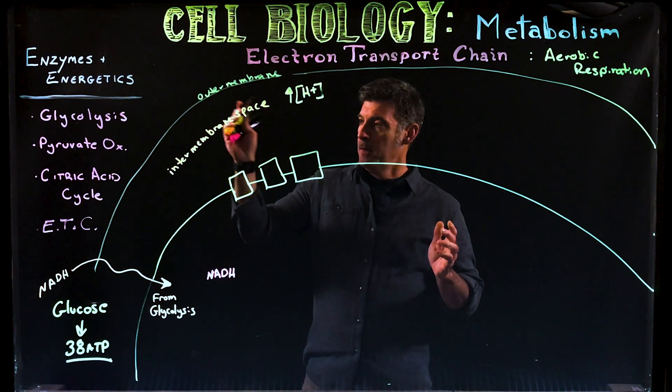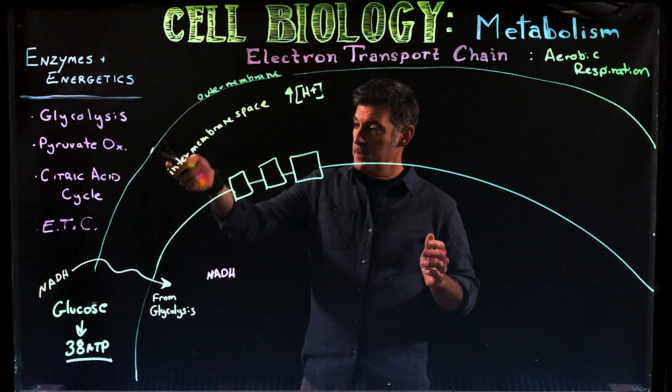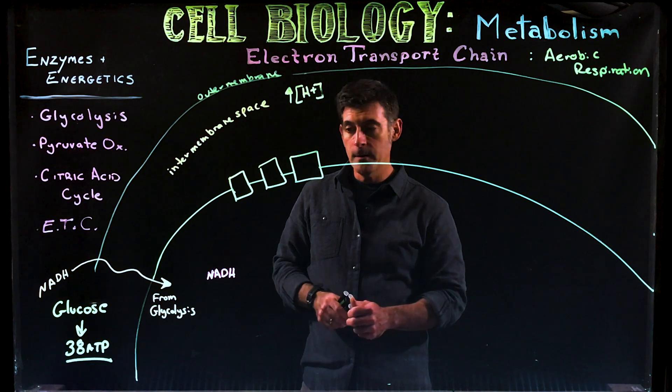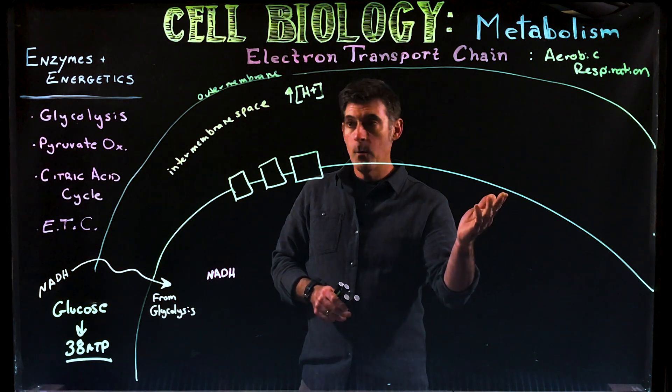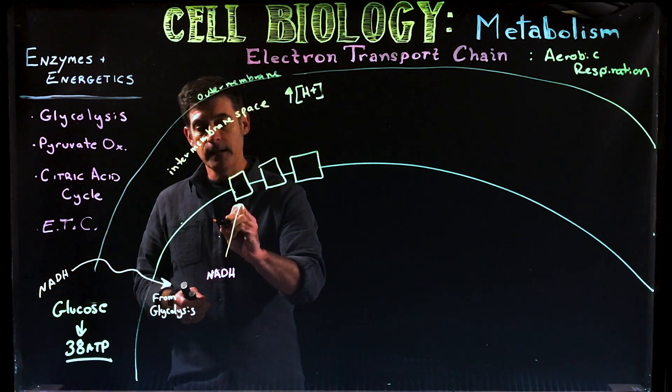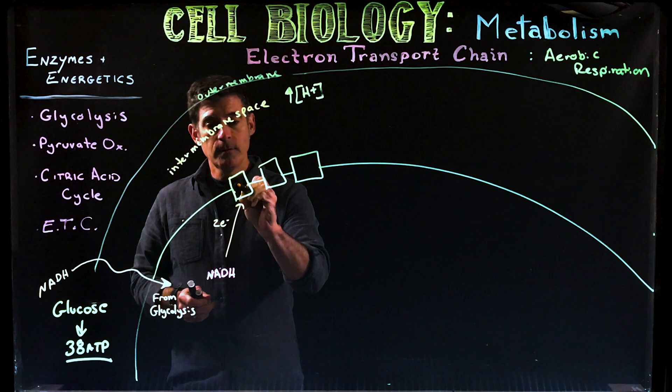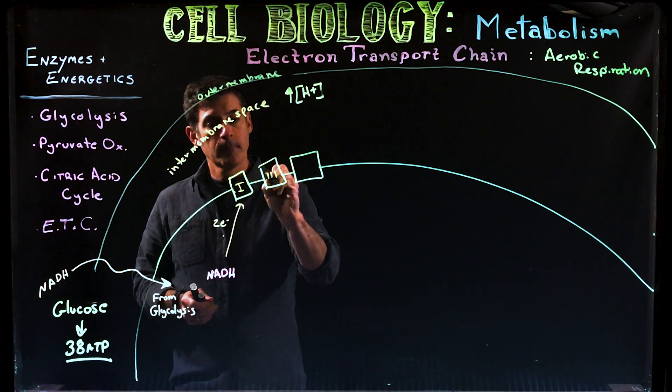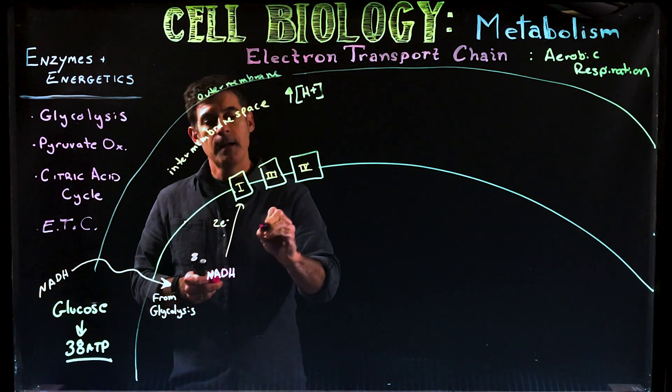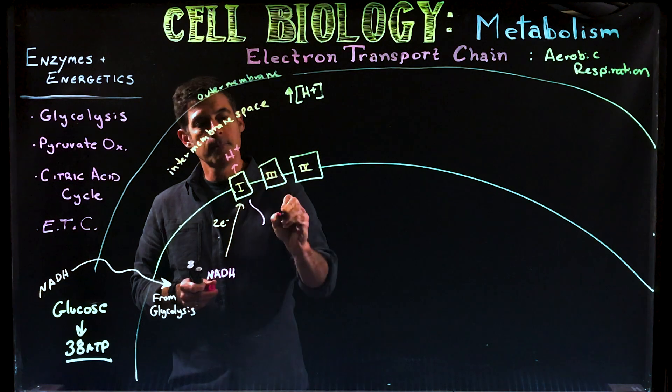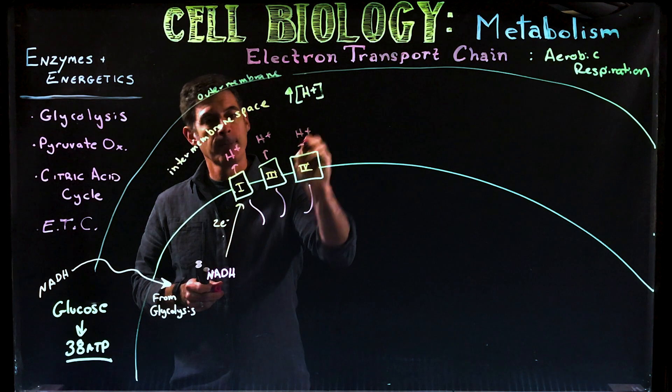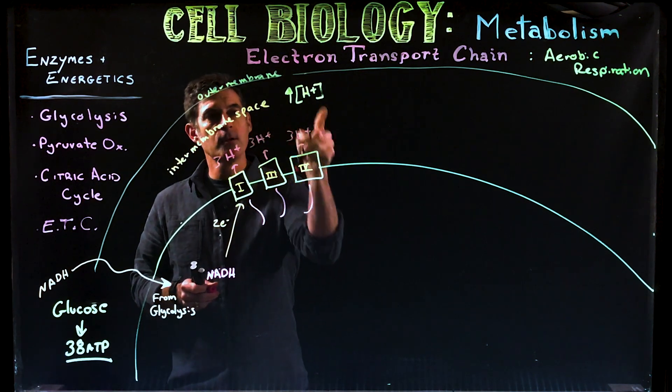So we have now gone through glycolysis, pyruvate oxidation, the citric acid cycle showing how NADH is made in the cytoplasm and then inside the mitochondrial matrix. The last thing we went through was the electron transport chain itself, showing how NADH molecules deliver electrons to these transmembrane proteins. These transmembrane proteins are active transport pumps.